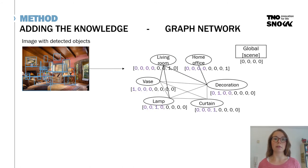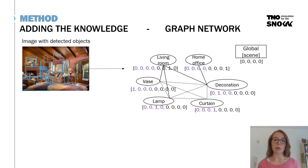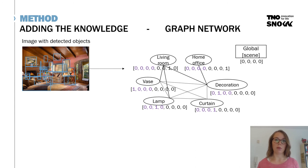For data representation in the graph network, we use one-hot encoding to represent object types in nodes, and a vector of length four to represent the global scene type — four because we have four different scene types to detect. You could use word embeddings to represent object or scene types for more context, but we chose to keep it simple with one-hot encoded vectors.